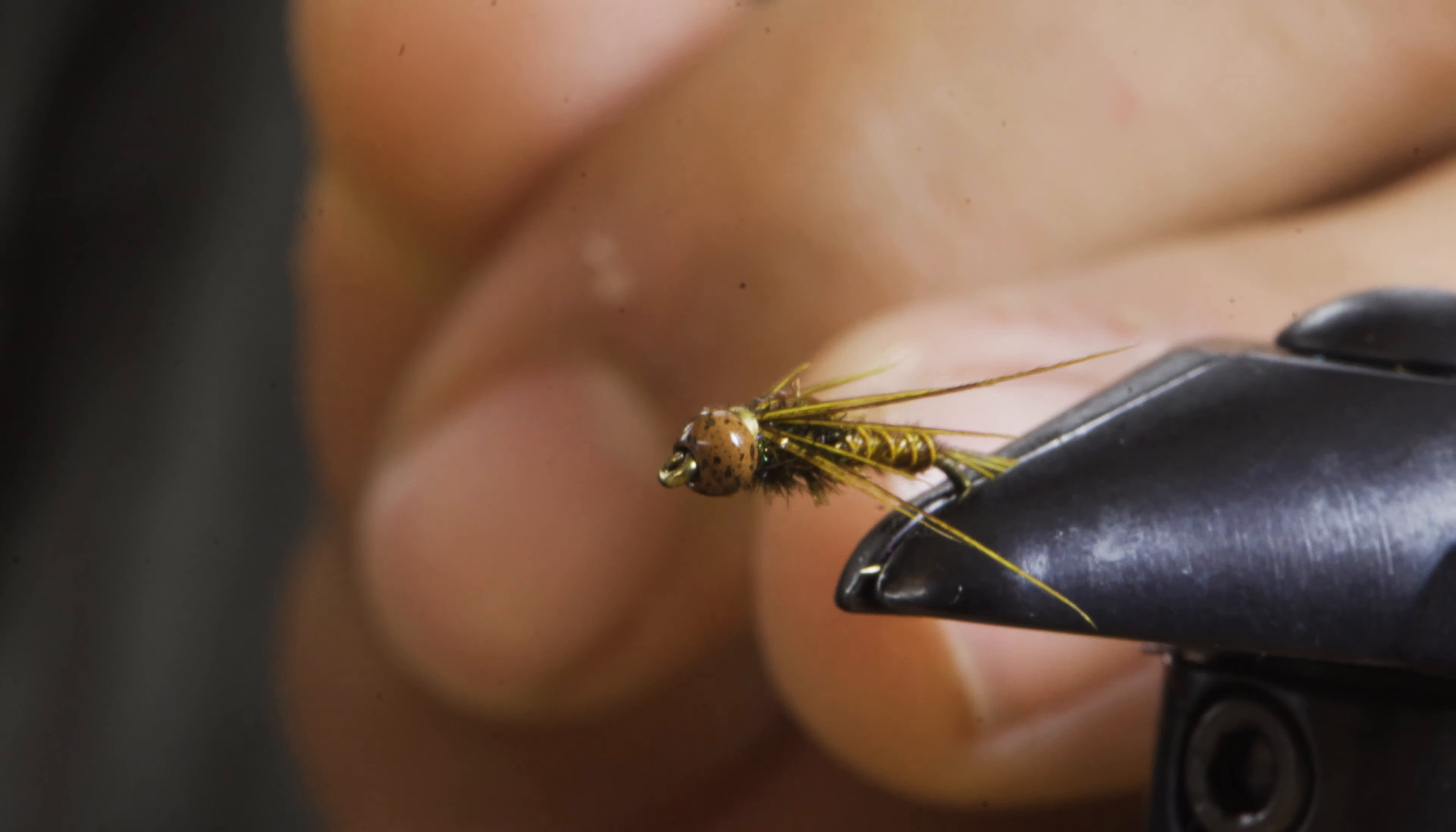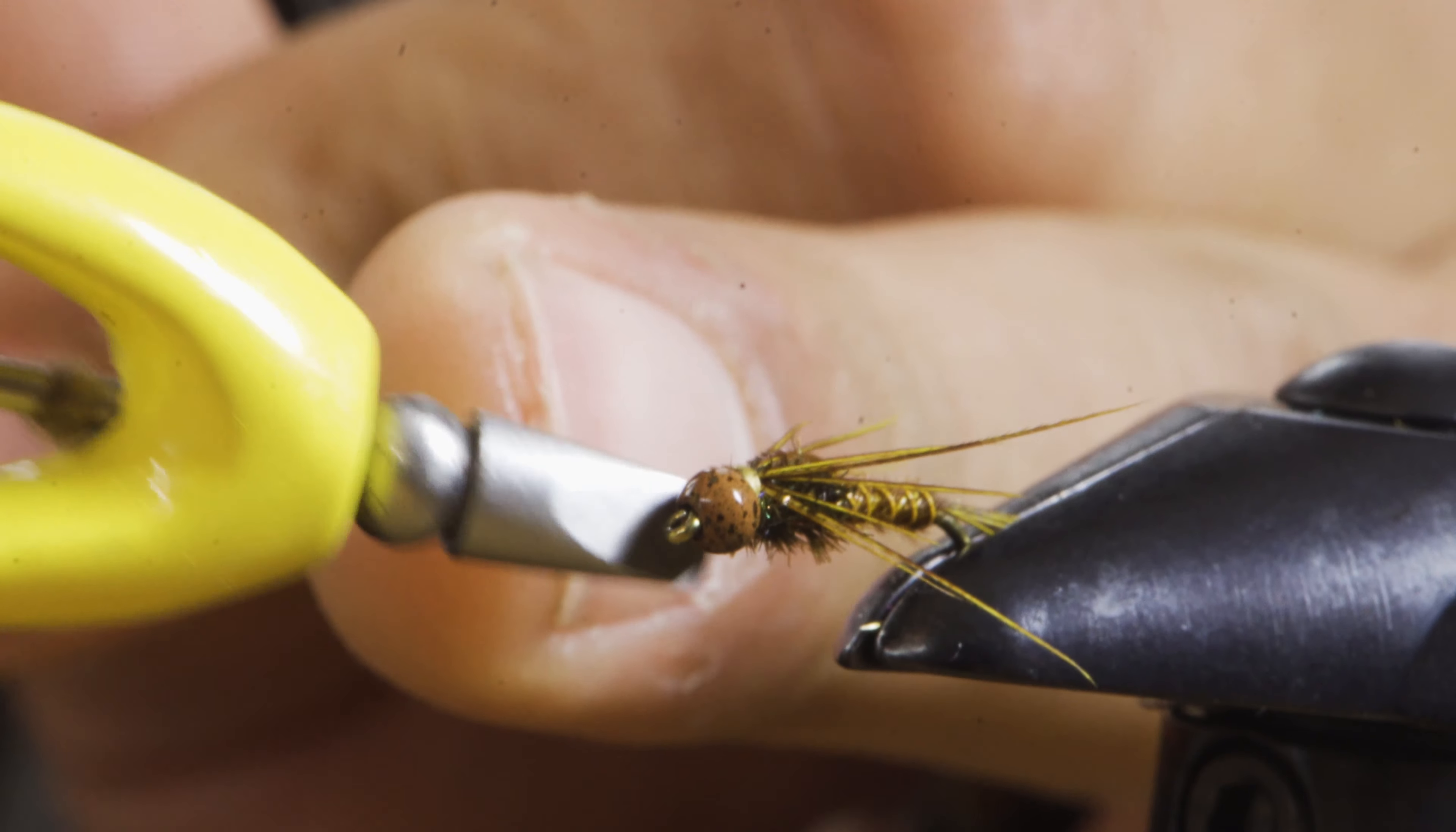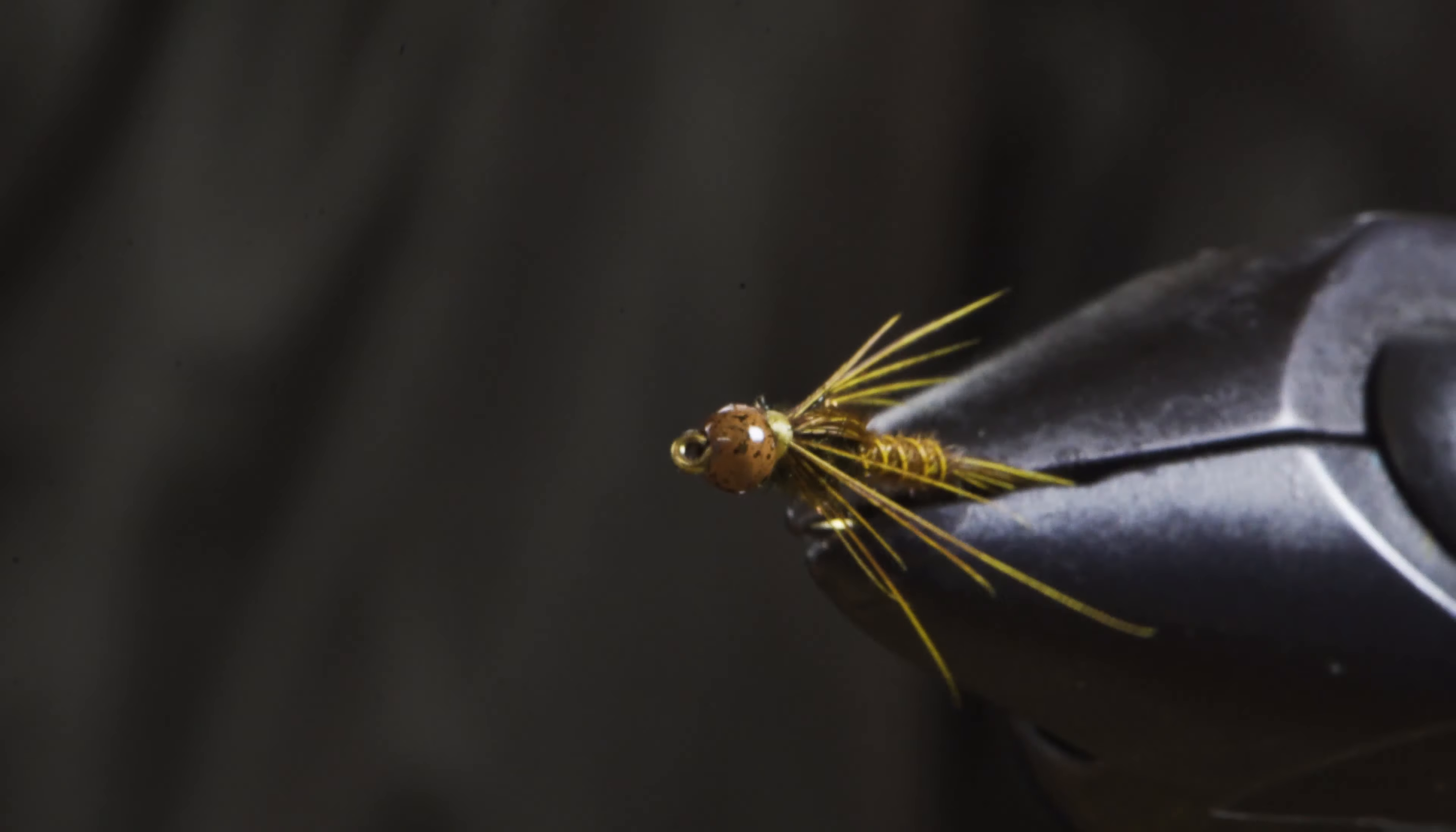Here on your thread, I like using this whip finisher because it has a tool on the tip that allows you to easily pop the thread. Keeps your scissors nice and sharp. It's one less cut you need to add to the life of your scissors.